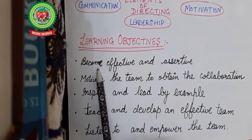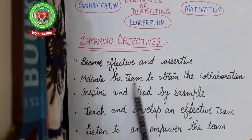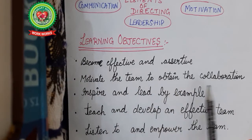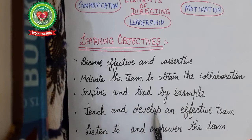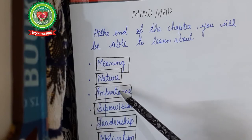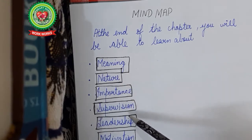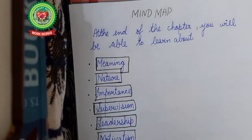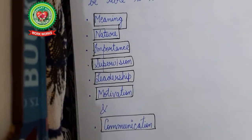The learning objectives include: become effective and assertive, motivate the team to obtain collaboration, inspire and lead by example, teach and develop an effective team, and listen to and empower the team. At the end of this chapter you will also be able to learn about the meaning of directing, its nature, importance, supervision, leadership, motivation, and communication.